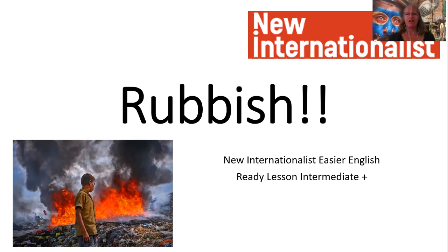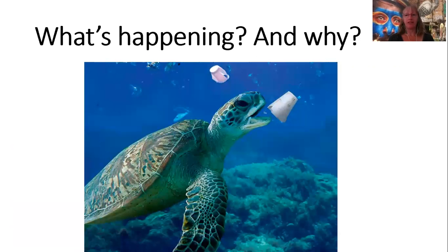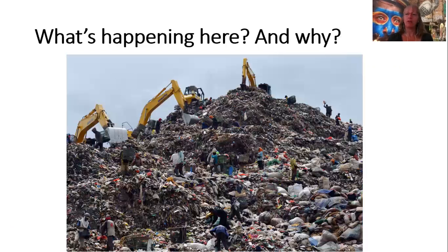First picture — what's happening here and why? Yeah, turtles, giant turtles eating plastic in our oceans. Next picture, what's happening here and why? Yeah, a terrible sight of people living off rubbish dumps — huge, massive rubbish dumps where nothing ever breaks down.